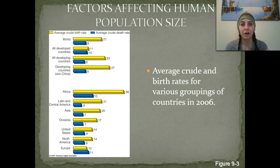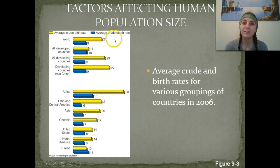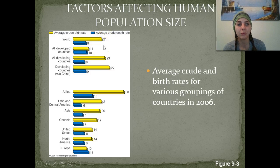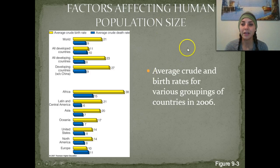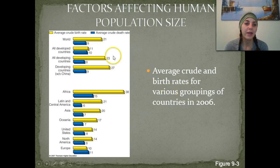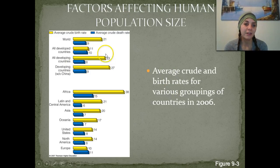Looking at this chart, we're going to look at the average crude birth rate and the average crude death rate — and remember, this is out of 1,000 people. So 21 out of 1,000 people worldwide are going to give birth, and 9 people out of 1,000 will die. Developed countries have lower birth rates, and developing countries have much higher birth rates.